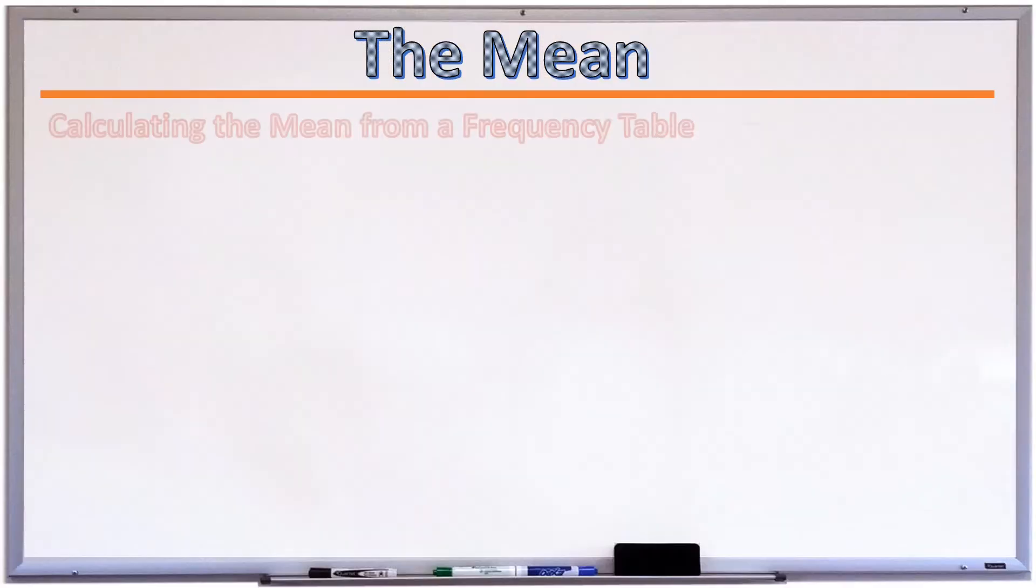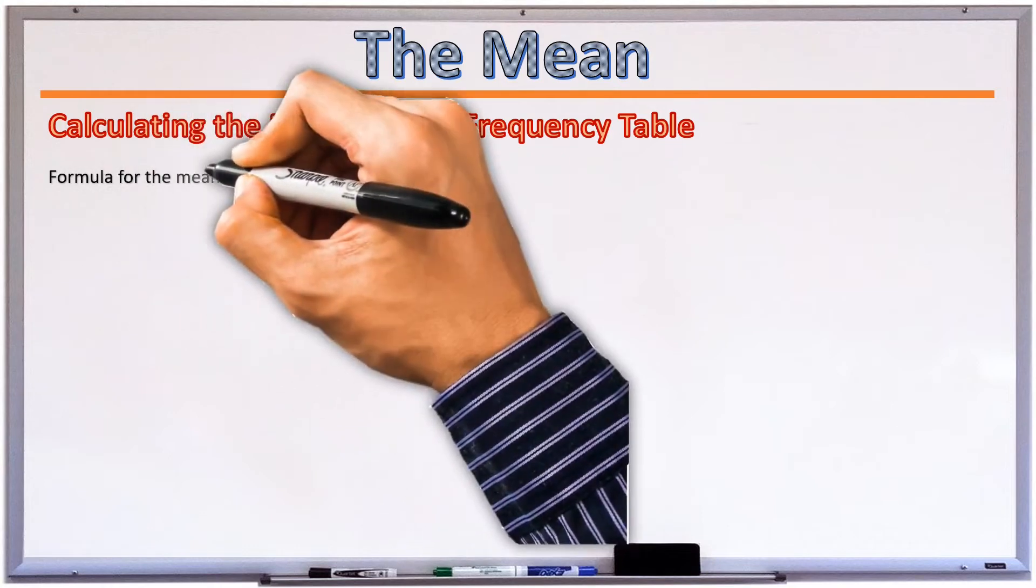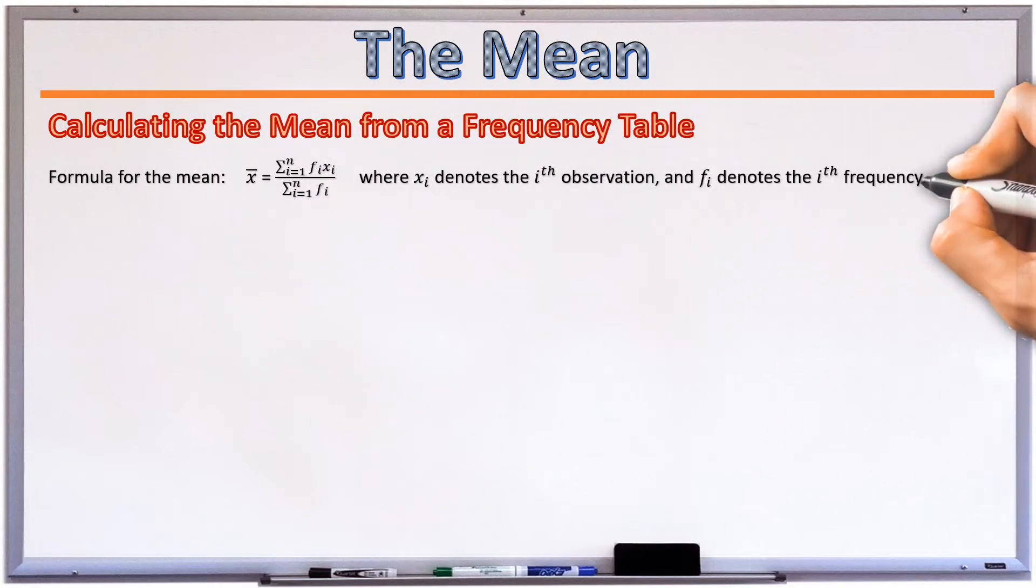Calculating the mean from a frequency table. When given a frequency table, the formula for calculating the mean is given by x bar equals the sum from i equals 1 all the way to n of fi times by xi, divided by the sum from i equals 1 to n of all your fi's. So here, xi denotes the actual i-th observation, and fi denotes the i-th frequency. So this formula should make logical sense after considering the following example.